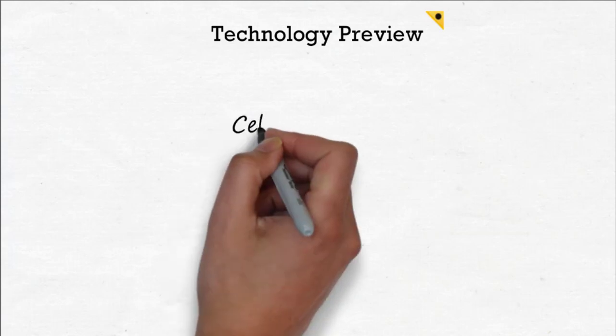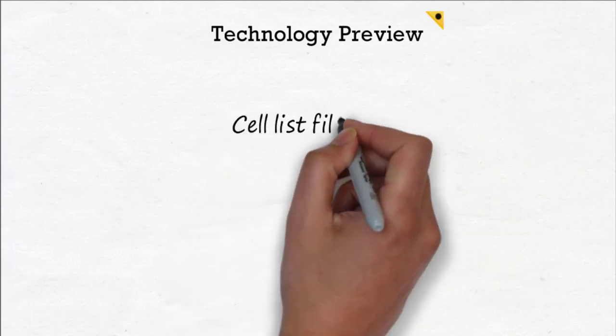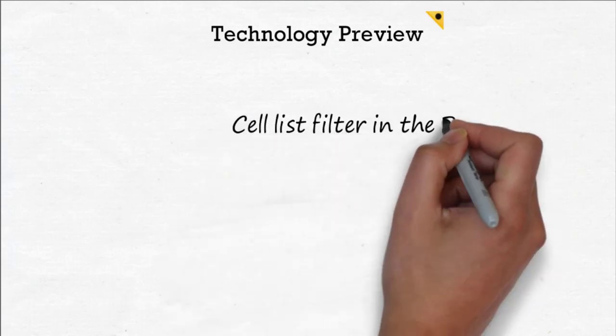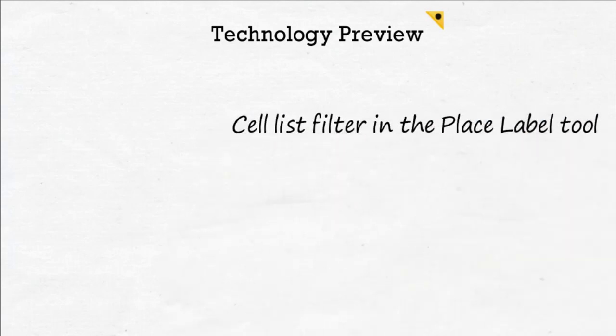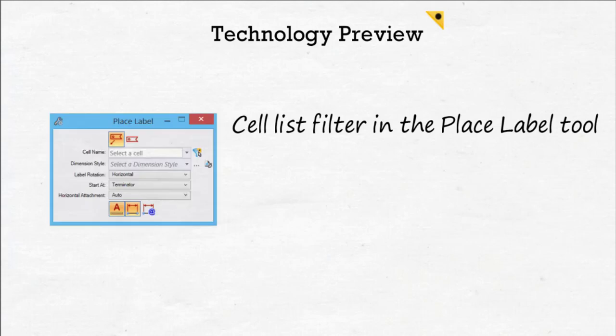Another useful annotation enhancement is the addition of a Cell List filter in the Place Label tool. If turned on, the Cell Name field displays only the cells that are available for use by the selected element type. For example, if you select a pipe, only cells associated with the pipe are listed.